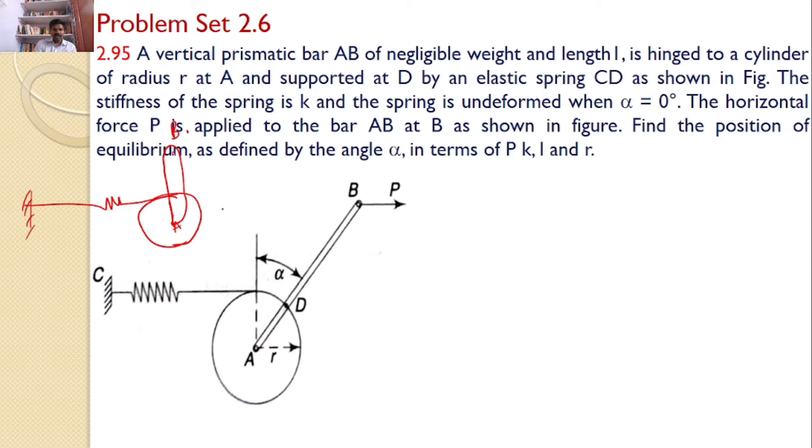What happened here? We are applying a force P. Since it is fixed, it will try to rotate. This is the rotation position. After rotating, this AB makes an angle alpha with the vertical. Our interest is to find the value of alpha to make the body under equilibrium.